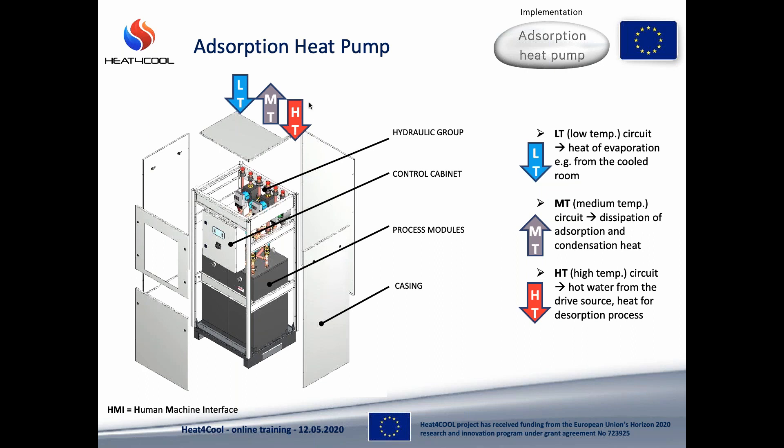HT has to be connected with a source of heat, for example solar collectors. MT is the heat dissipation circuit — this one may be connected with a dry cooler, wet cooling tower, swimming pool, or underground heat exchangers. Basically anything where you can dissipate heat at proper temperature levels.